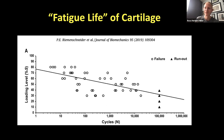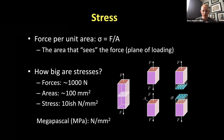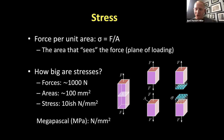Stress is the force applied to a structure divided by the area that sees that force — the area over which the force is spread. Intuitively, you could have a low stress with a low force, or even a high force spread out over a big area. Just because we have a high force placed on a tissue like cartilage doesn't necessarily mean we have a high stress — the geometry of the tissue being loaded is also a big factor.